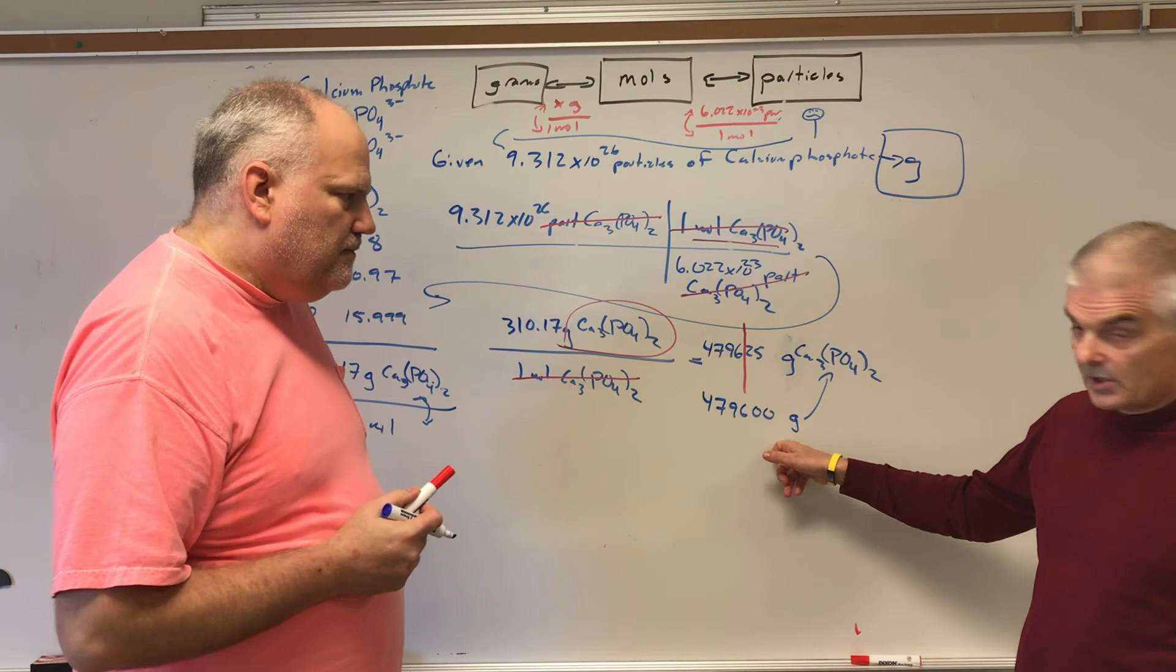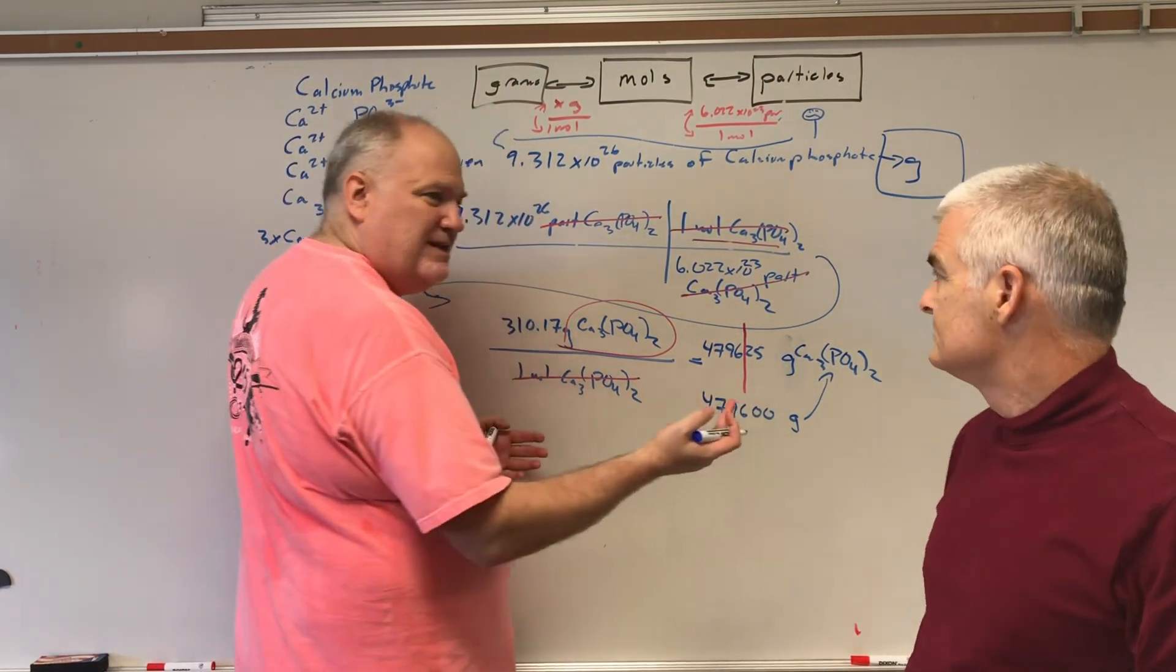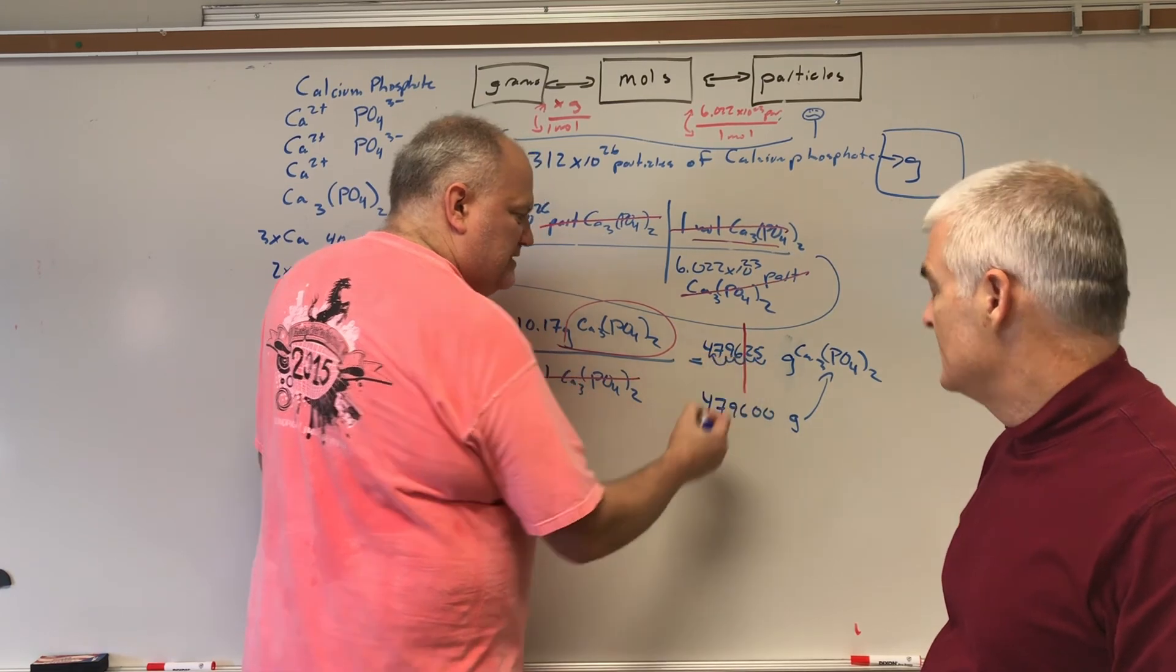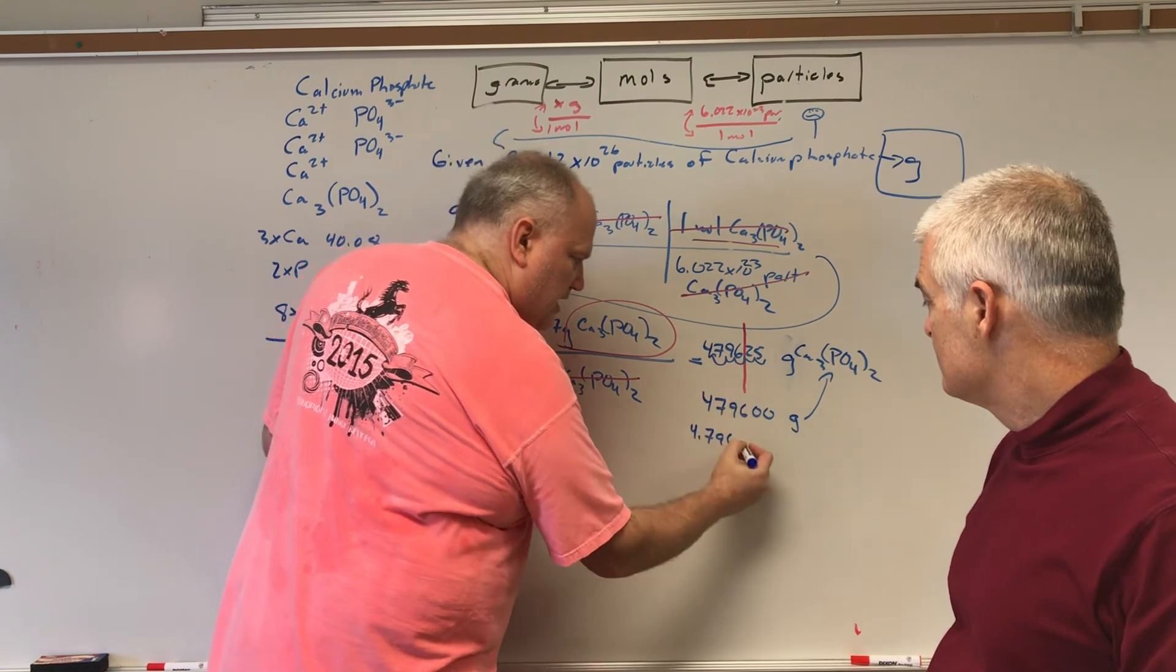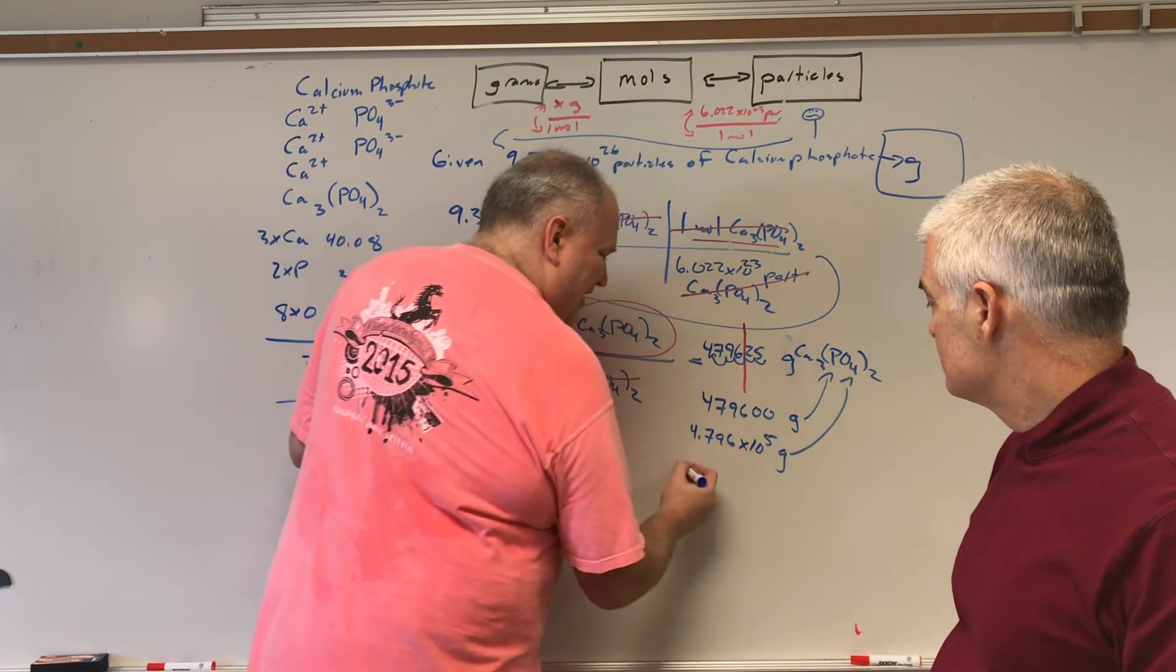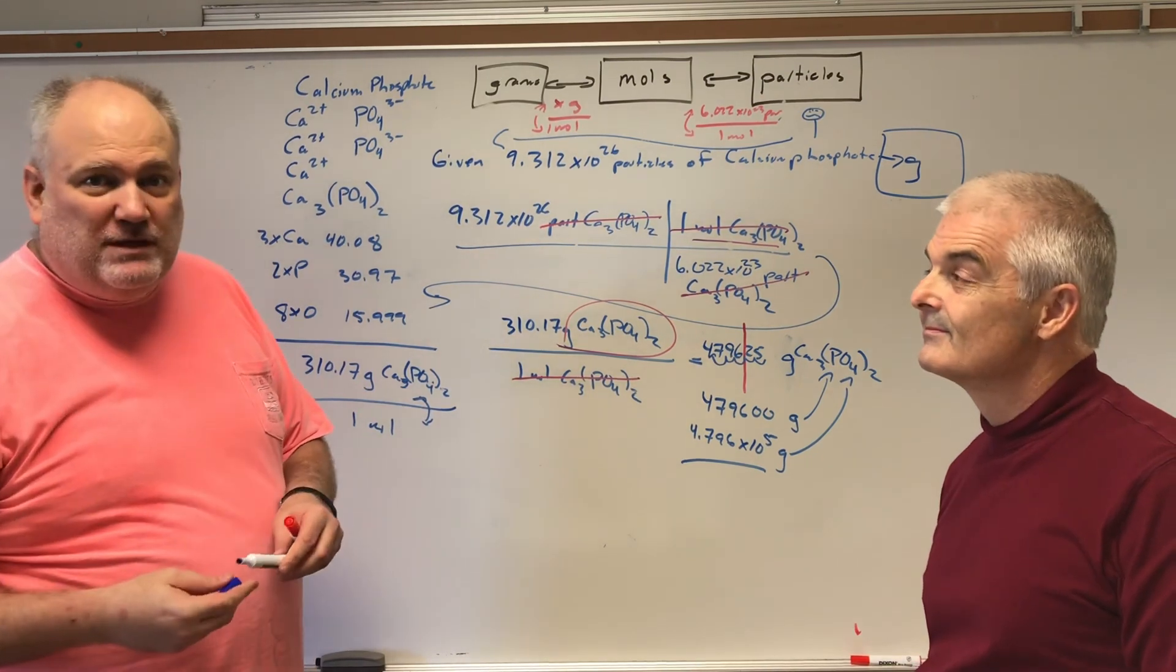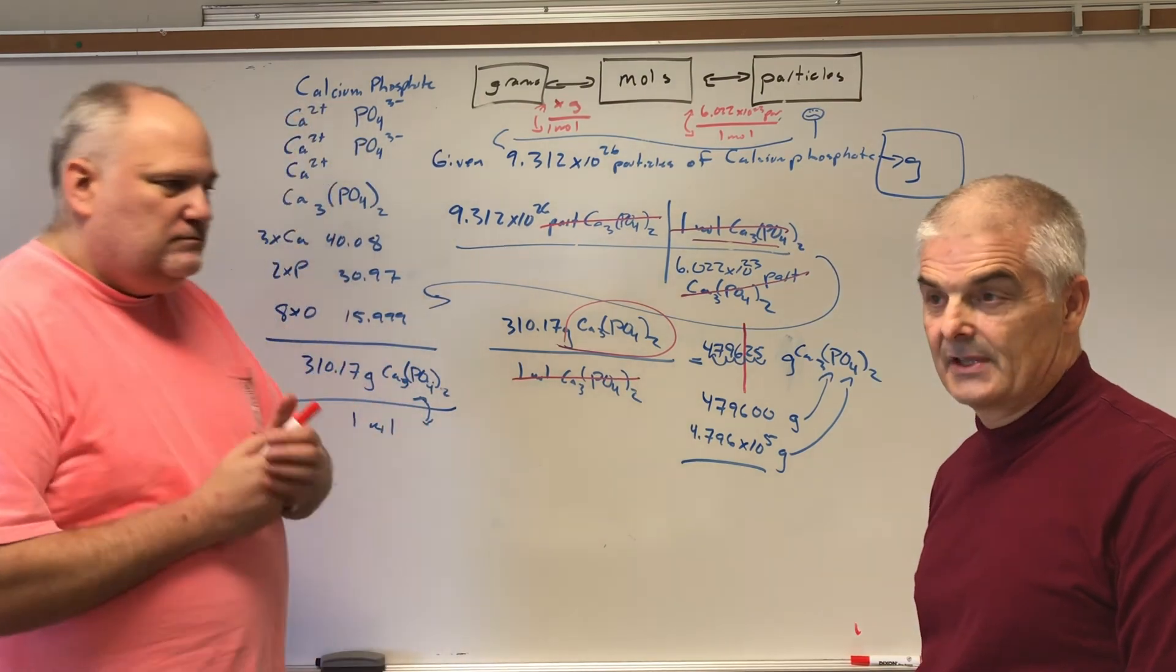You could also write this in scientific notation. I would encourage it may be easier because I'm not a big fan of writing in zeros as placeholders. Can we go one, two, three, four, five places to the left, and I could go 4.796 times 10^5 grams of this. Either of these answers are going to be okay. You will still be given credit for either of these two answers.